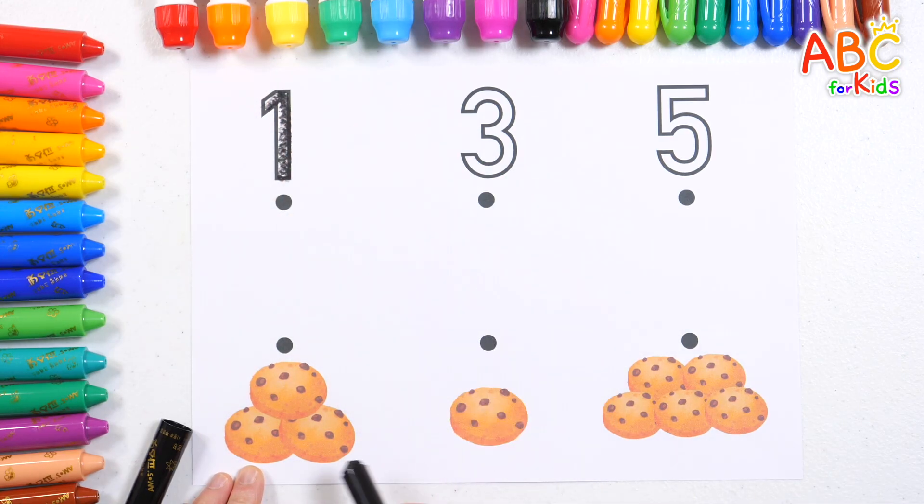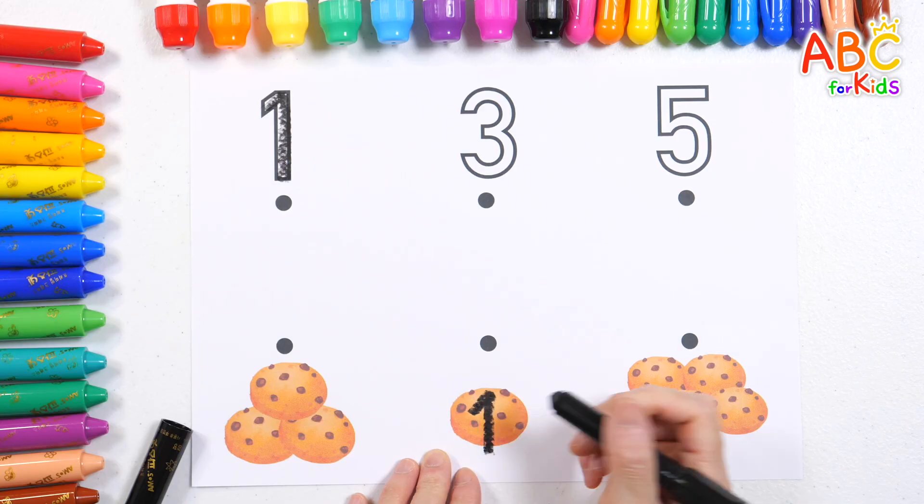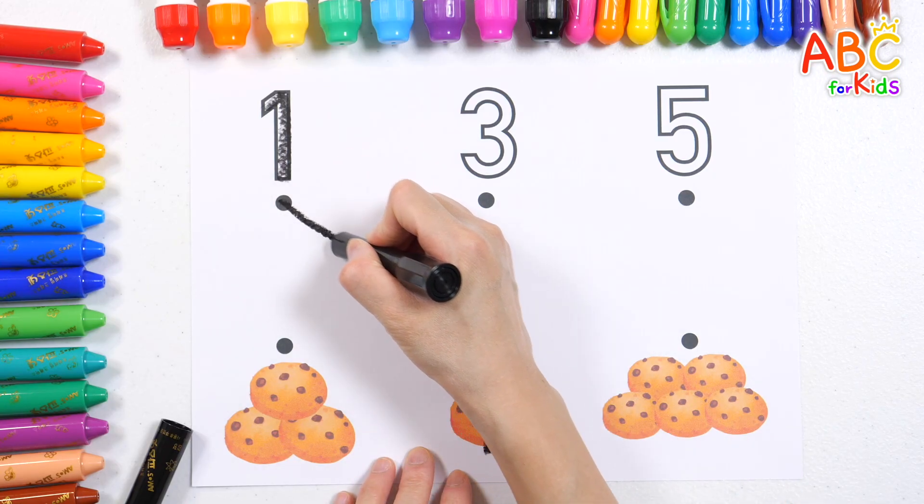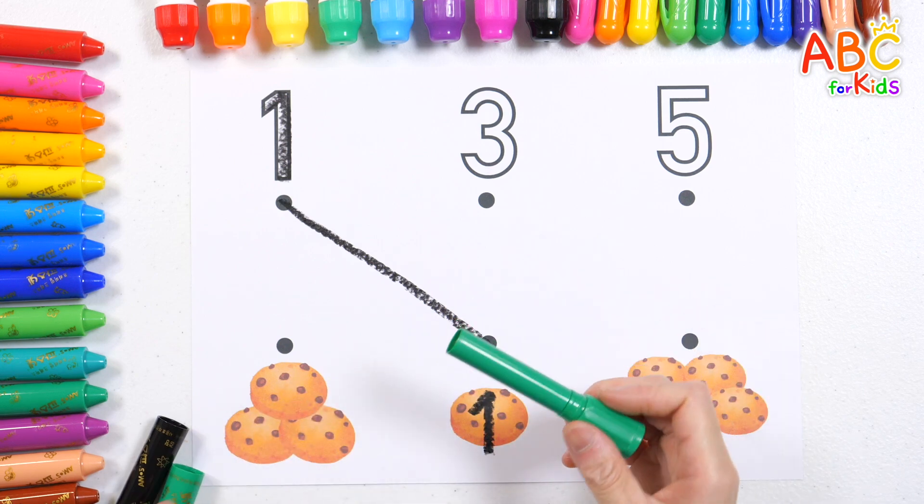One, two, touch your nose, three, four, tap your toes, five, six, jump so high, seven, eight, reach the sky, nine, ten, spin around, sit back down.